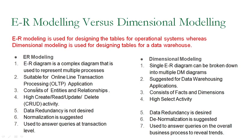As the name suggests, an ER diagram consists of entities and their relationships — one-to-one relationships, one-to-many relationships, specialization, generalization — concepts we have already seen. Whereas in dimensional modeling, it consists of facts and dimensions, or we can say it contains fact tables and dimension tables. We will look at dimensions and facts later in more detail.